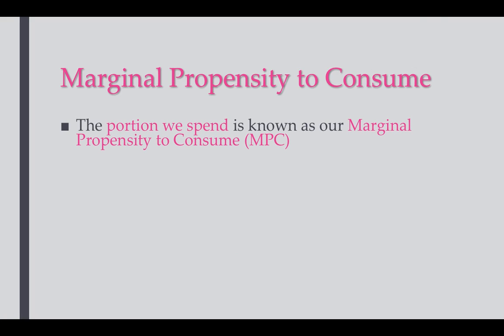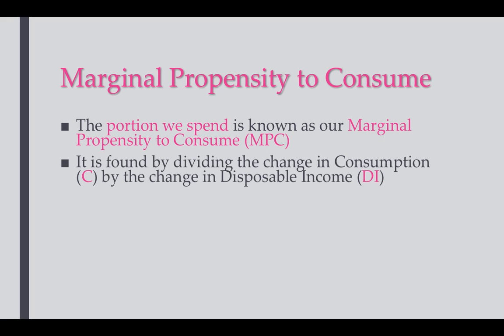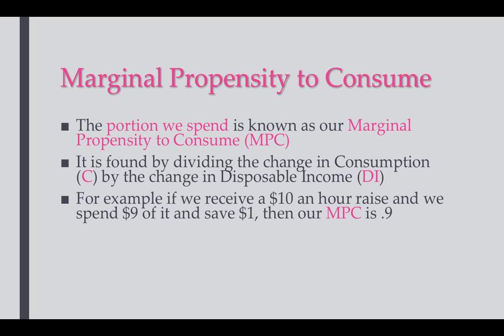The marginal propensity to consume is the portion of extra income that we choose to spend — the MPC. We find the MPC by dividing the change in consumption by the change in disposable income. For example, if I find $10 on the ground or get a $10/hr raise, and I spend $9 of it and save $1, then my MPC is 9 divided by 10, which equals 0.9.